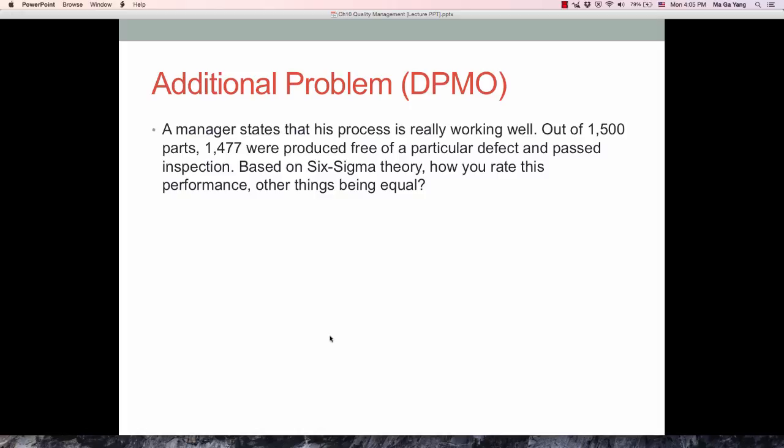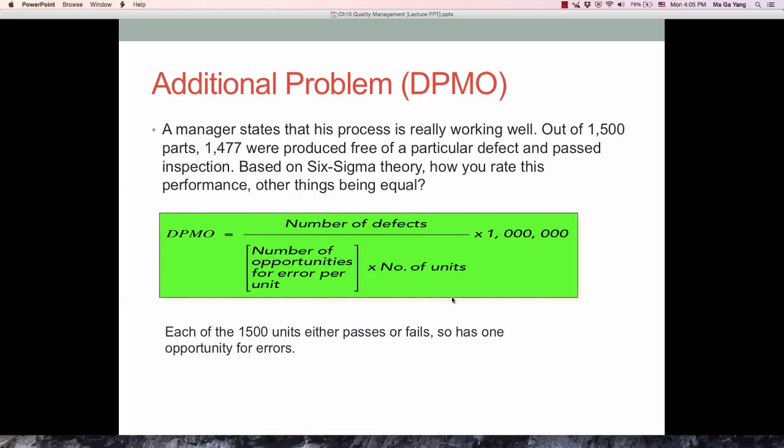Let's have another problem. The manager states that his process is really working well. Out of 1,500 parts, 1,477 were produced free of a particular defect and passed inspection. Based on Six Sigma theory, how do you rate this performance, other things being equal? The manager thinks this process is really good. But let's examine, based on the Six Sigma theory of DPMO, whether this process is good or bad. This is the formula. Each of the 1,500 units either passes or fails, with one opportunity for errors.